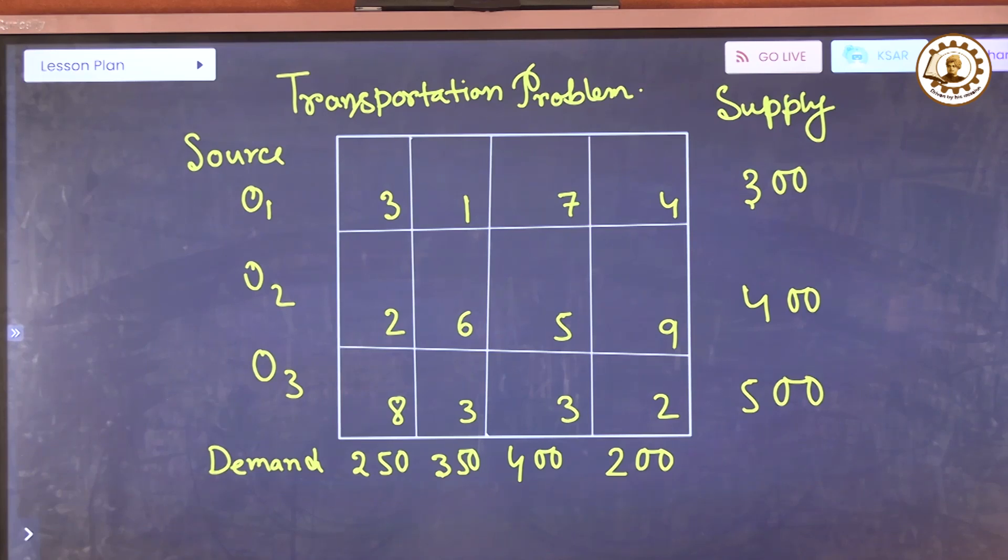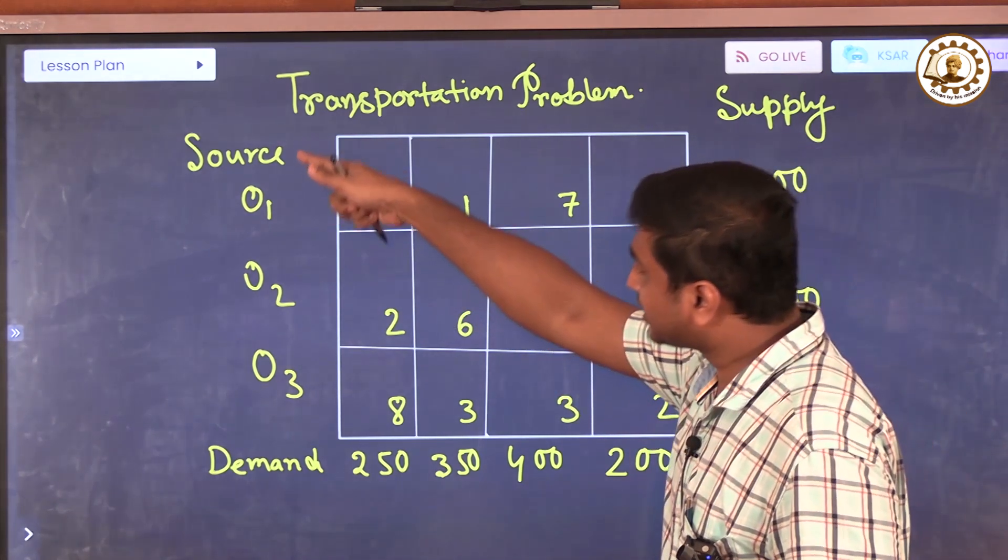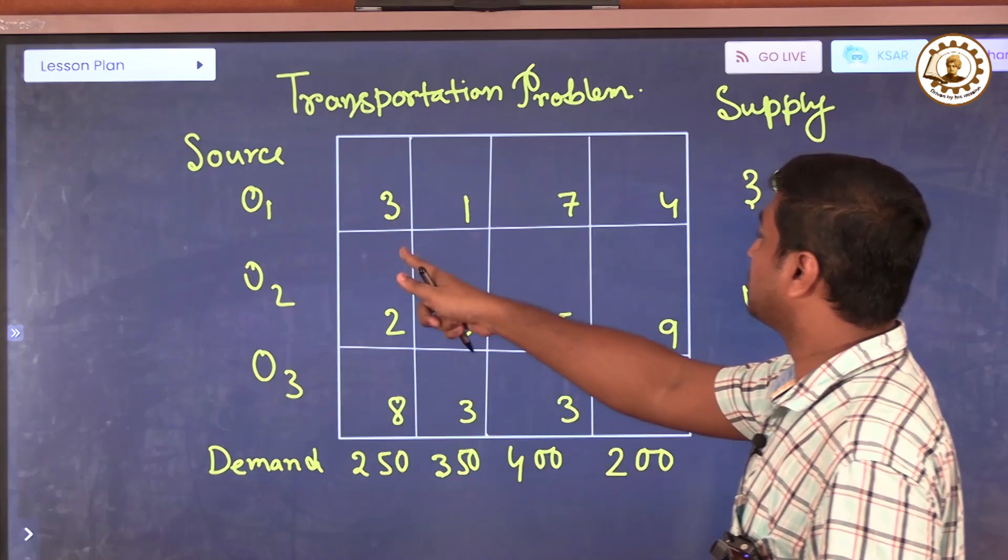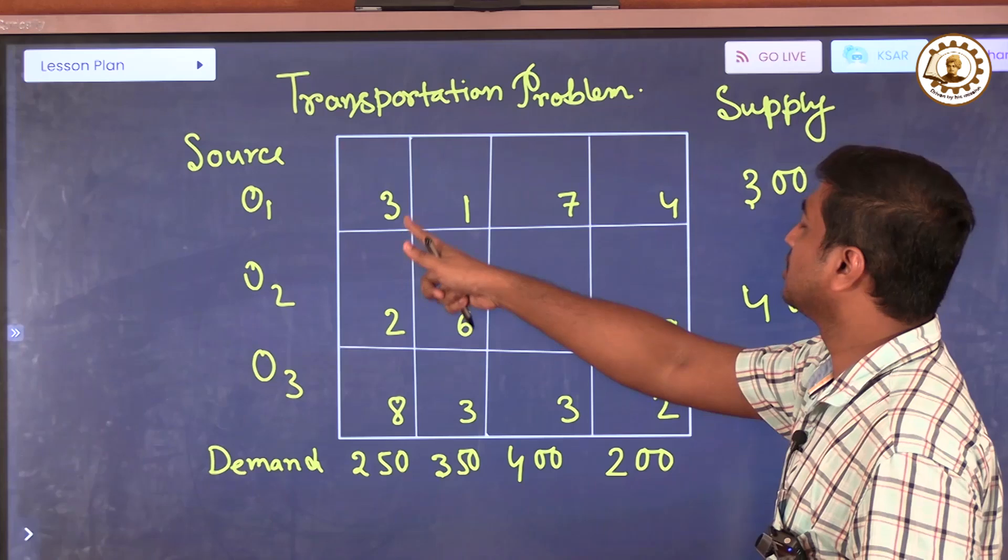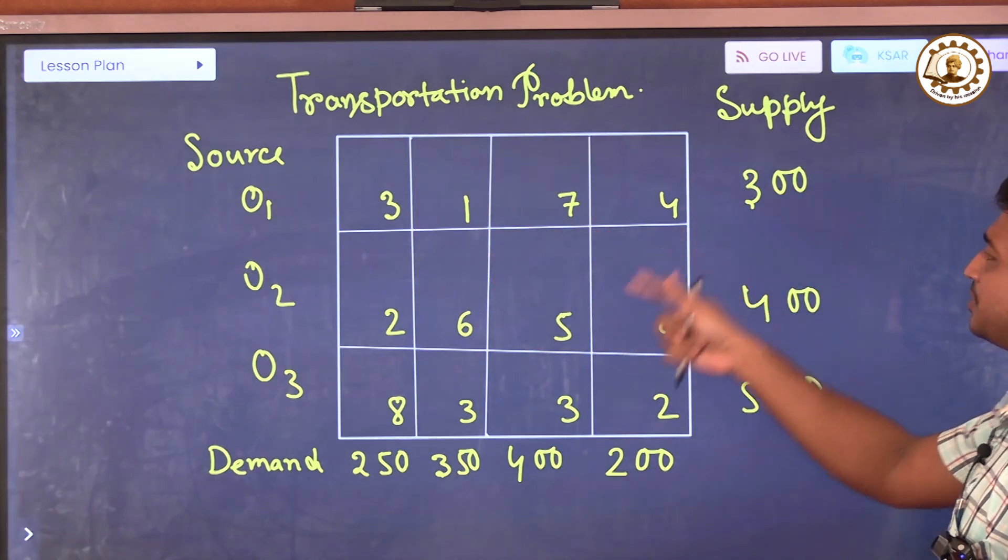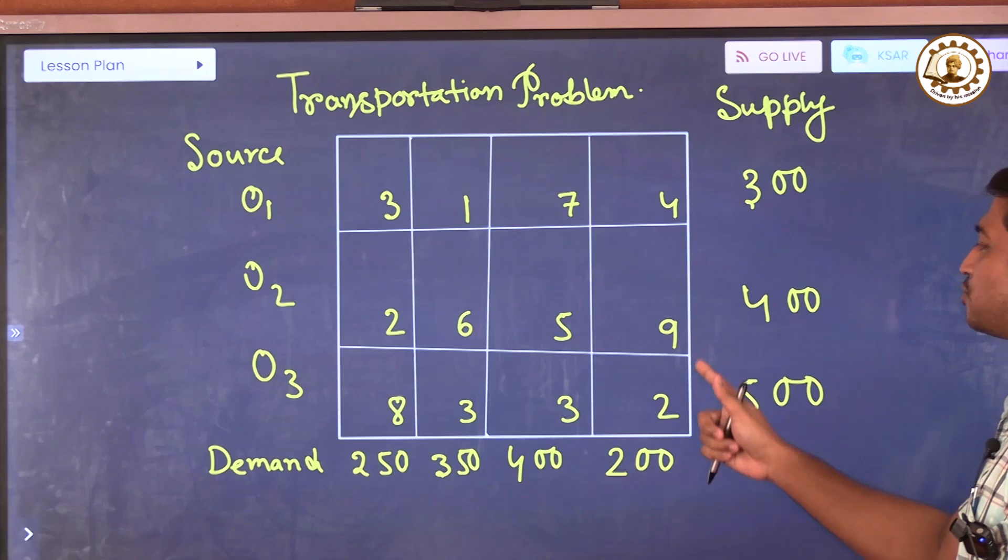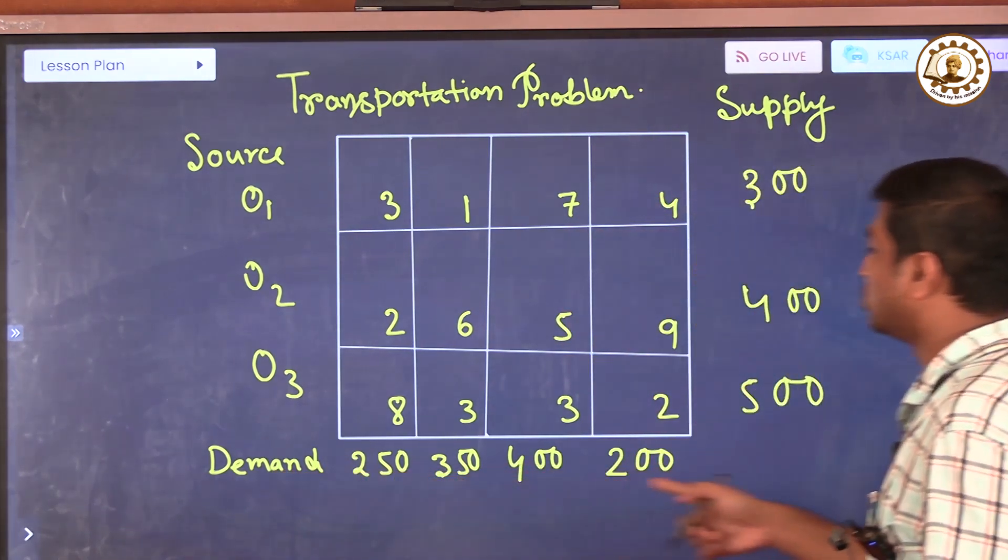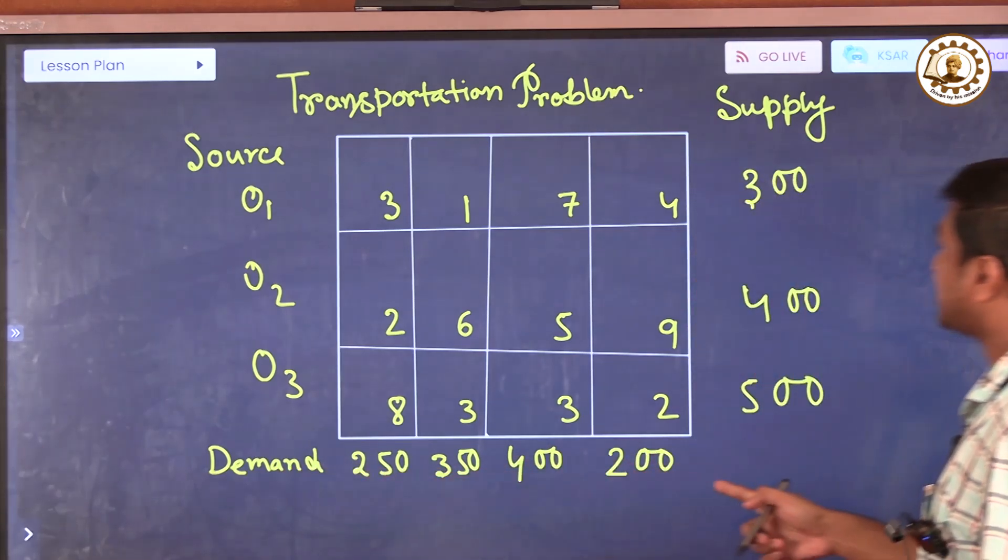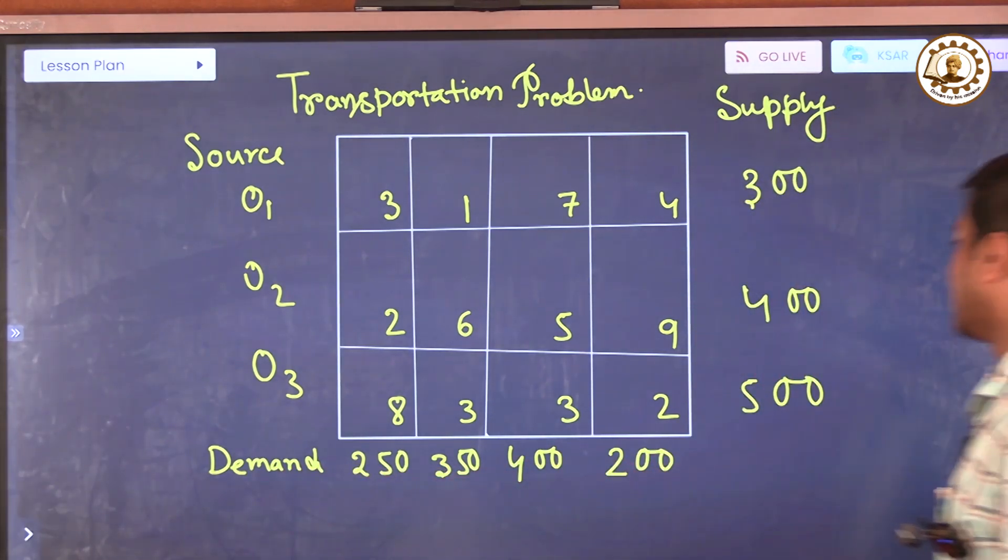Prior to the solution, I will address a specific problem pertaining to the Least Cost Cell Method. So this is our transportation problem. Here we can see there are three origins, and to send the product or goods these are the costs: three rupees, one rupee, seven rupees, four rupees, two rupees, six rupees, five rupees, nine rupees. These are the transportation costs and these are our goods.